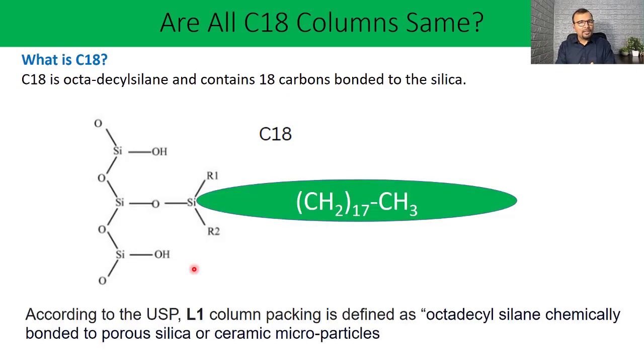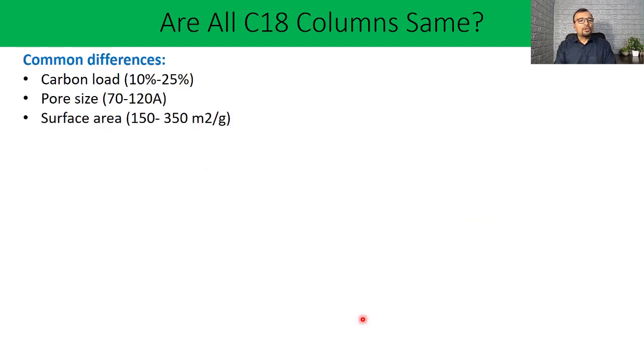According to the USP, the C18 stationary phase is classified as the L1 column packing, and there is no further distinguishing between different C18 stationary phases. The common differences based on dimension are obvious, like different length, diameter, particle size will certainly have different chromatographic impact. But there are certain important factors which are also different from one column to another column, like carbon load, pore size, and surface area.